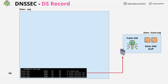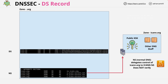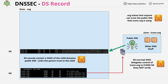The .org zone needs to explicitly state that it trusts the ICANN.org child zone, and this is done using a Delegated Signer record set. What this does is store a hash of the child domain's public key-signing key in this record in the parent zone. Since the hash is one way and unique, adding this record shows that the parent zone trusts the child's key-signing key for that child zone. So at this point, the .org zone is confirming its trust of the ICANN.org KSK via this record set.